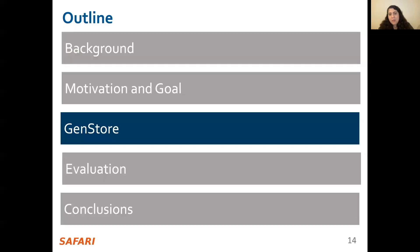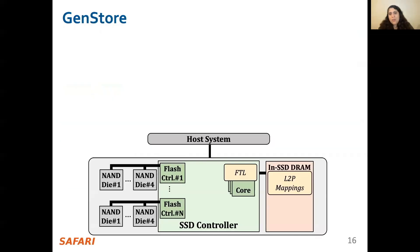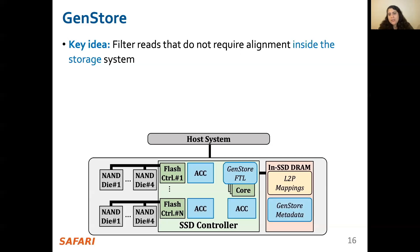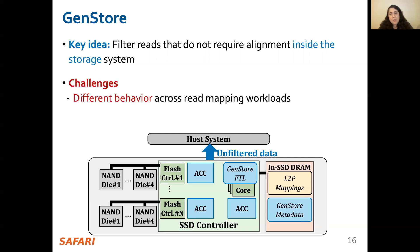To this end, we propose GenStore, which is the first in-storage processing system designed for genome sequence analysis. Our key idea is to filter reads that do not require alignment inside the storage system and send unfiltered data to the host system for further processing. However, filtering reads in a modern SSD can be challenging due to different behavior across readmapping workloads and the limited hardware resources available in the SSD.